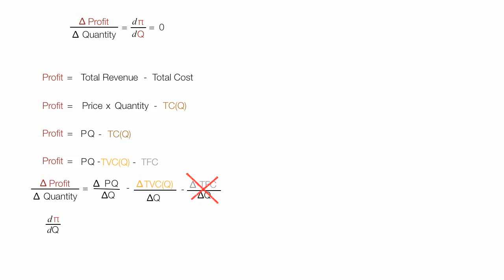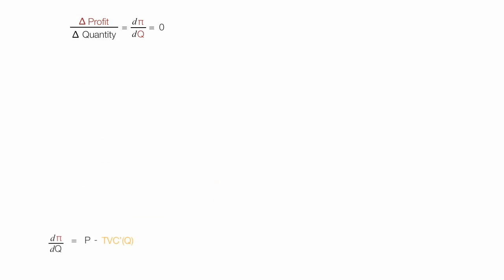Now I'm going to use proper calculus notation. I can write this as d(P·Q)/dQ minus the change in total variable cost divided by the change in quantity. Taking the first derivative, the first part gives P, minus TVC prime as a function of quantity.